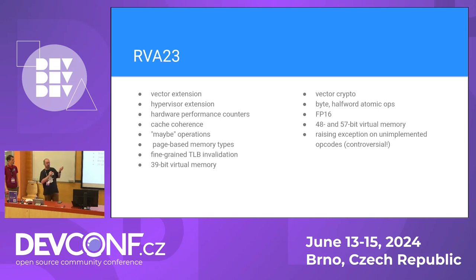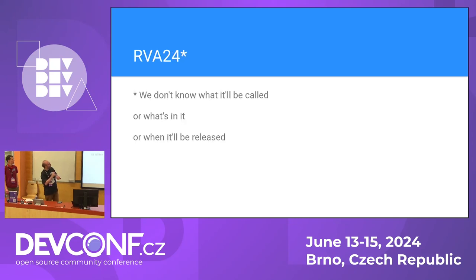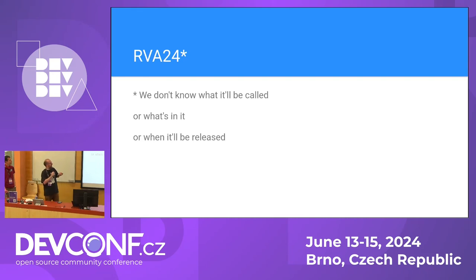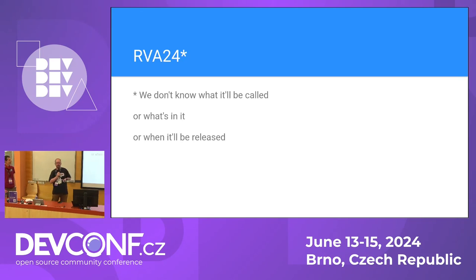After RVA23, what comes next? We don't know. They're going to change the naming convention because they don't like putting years in the names — they think it will date them too quickly. We don't know what's in the next profile or when it will be released. It would be nice if it were released in 2024, but given that it's already 2024 and RVA23 hasn't been released, I wouldn't necessarily bet on that.